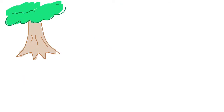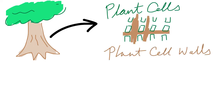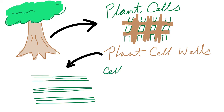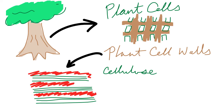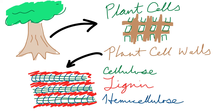Lignin is the second most abundant biopolymer found in trees and is primarily located in the plant cell walls. The cell walls are comprised of three main components: cellulose making up 50%, which forms long fibers that allows the plant to stand up straight; lignin, making up between 20 and 30% of the cell wall, acts as the glue and provides the plant with rigidity and resilience. Finally, hemicellulose binds the cellulose fibers and lignin together.